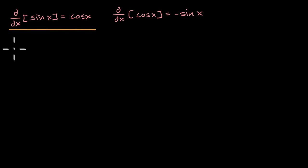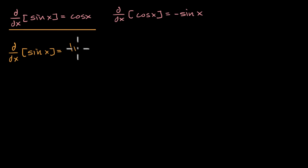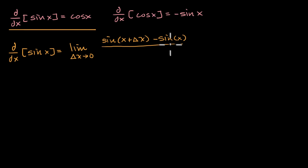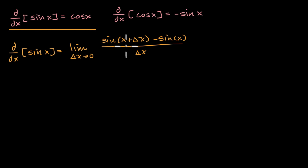So let's try to calculate it. The derivative with respect to x of sine of x, by definition, is going to be the limit as delta x approaches zero of sine of x plus delta x minus sine of x, all of that over delta x. This is really just the slope of the line between the point x comma sine of x and x plus delta x comma sine of x plus delta x.